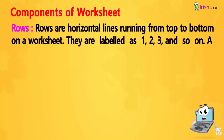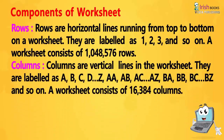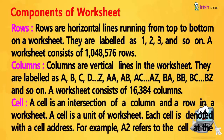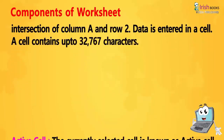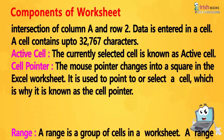Components of a worksheet — Rows: Rows are horizontal lines running from top to bottom on a worksheet. A worksheet consists of 1,48,576 rows. Columns: Columns are vertical lines in the worksheet. They are labelled as A, B, C... Z, AA, AB, AC... AZ, BA, BB, BC... and so on. A worksheet consists of 16,384 columns. Cell: A cell is an intersection of a column and a row in a worksheet. Each cell is denoted with a cell address — for example, A2 refers to the cell at the intersection of column A and row 2.